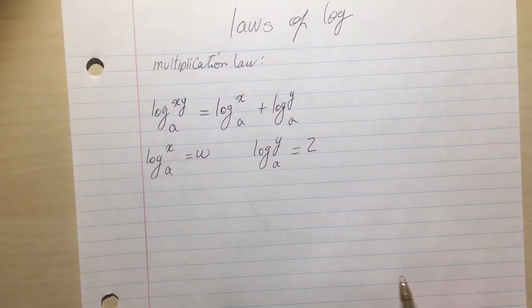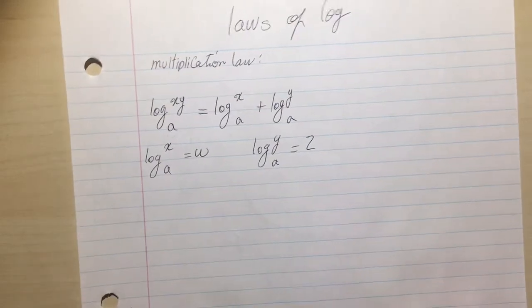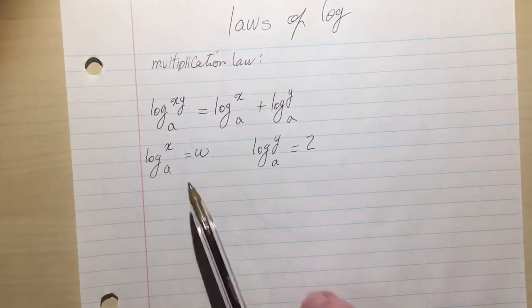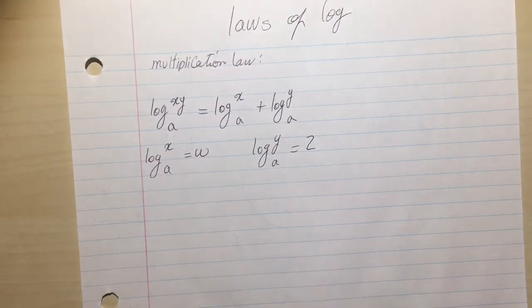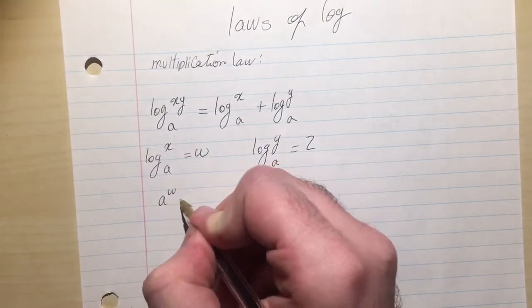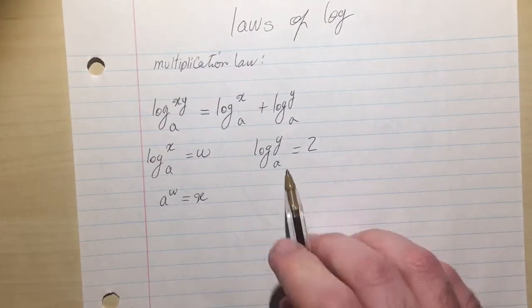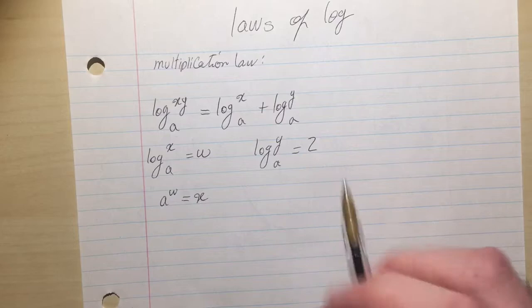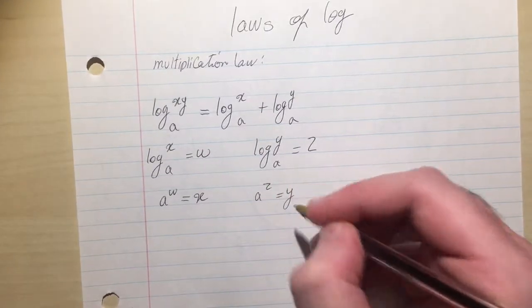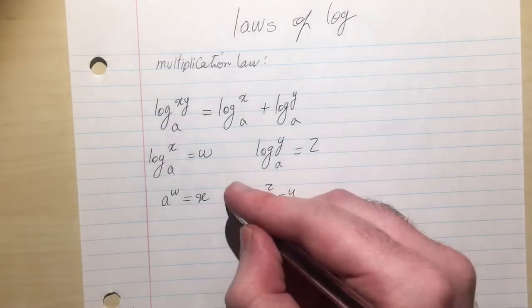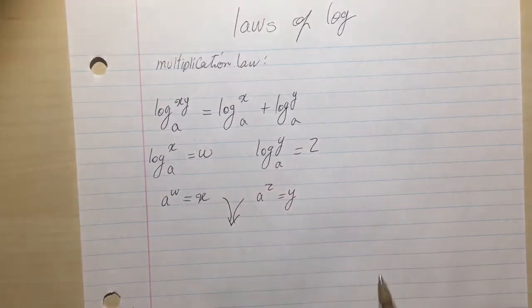So as I explained, you can write each of these logs in an exponential form. So the way of reading a log comes important here. So A to the w is x. Just write it, A to the w is x. Here, A to the z is y. And here is a trick.